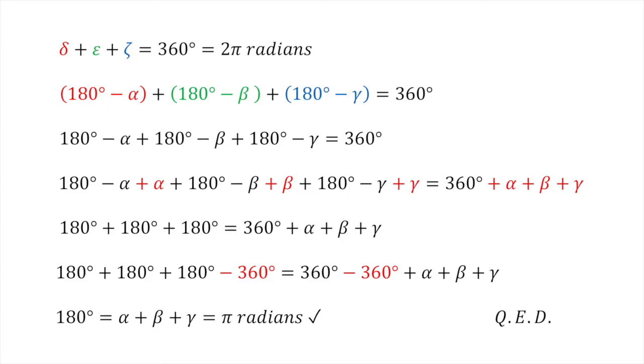And there we have it, the sum of the three internal angles of a triangle is 180 degrees. Thank you for watching Maths Whenever and see you next time.